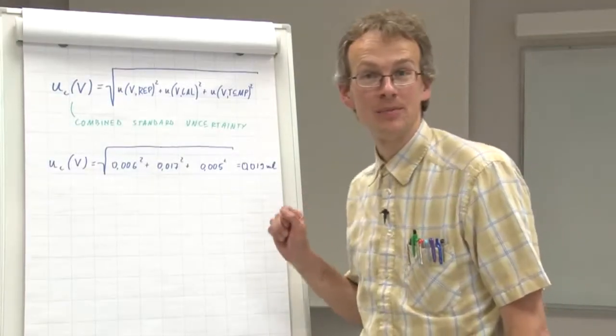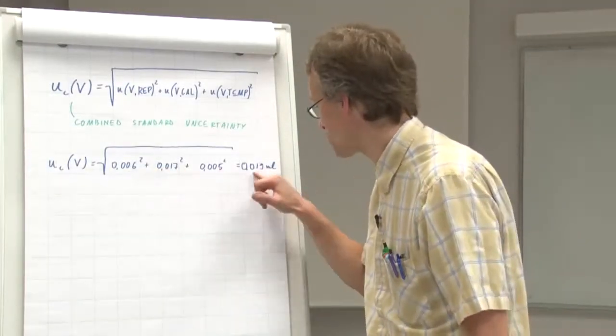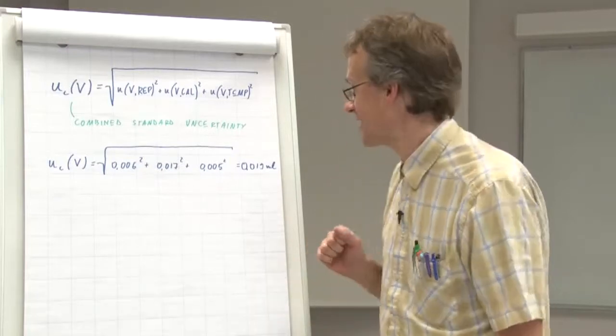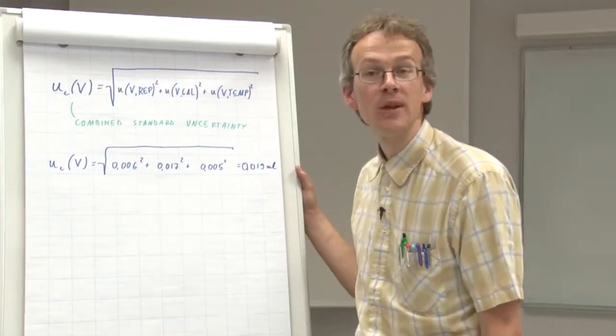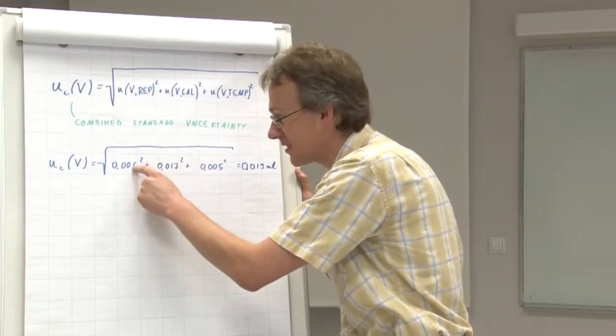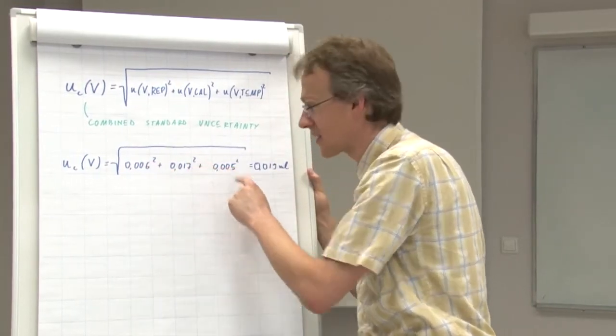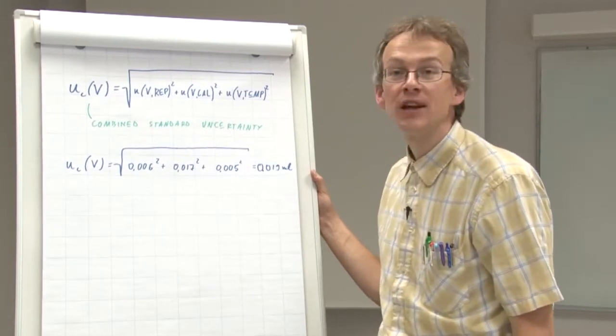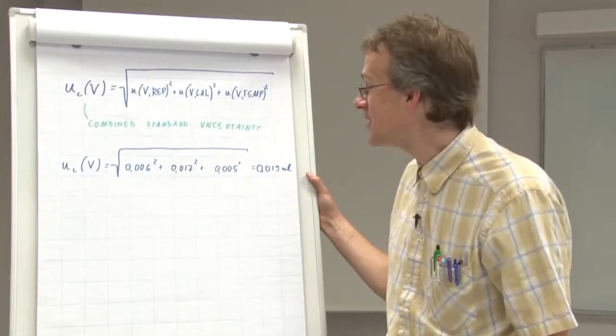Let us now examine a little bit closer those values. And what do we see? If we would simply sum up these three values, we would get altogether 0.028.